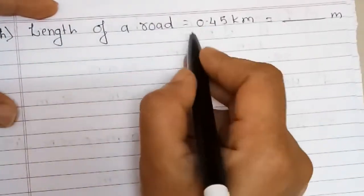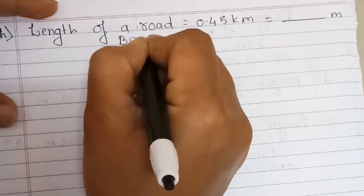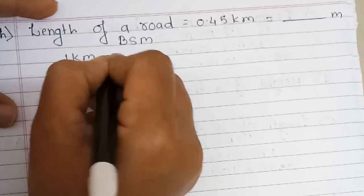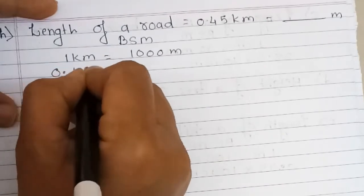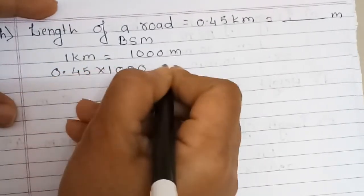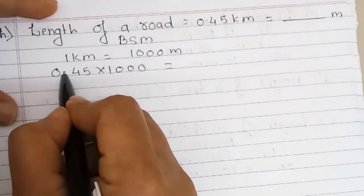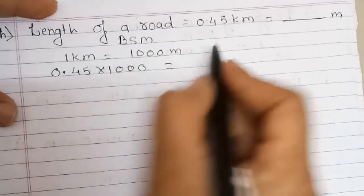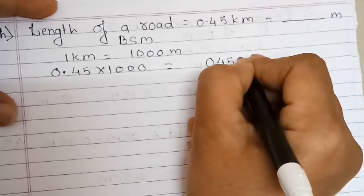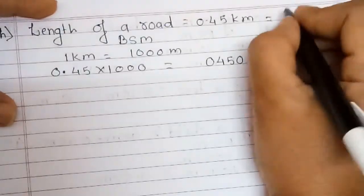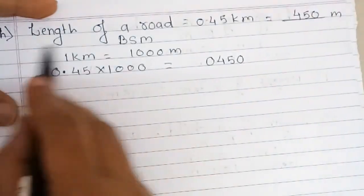The length of a road is 0.45 kilometers. You have to convert that into meters. Big to small — multiplication. As we know, 1 kilometer equals 1000 meters. So we multiply by 1000, moving the decimal point 3 places to the right: 0, 4, 5 — the 3rd place is 0. That means 450 meters is the length of the road.